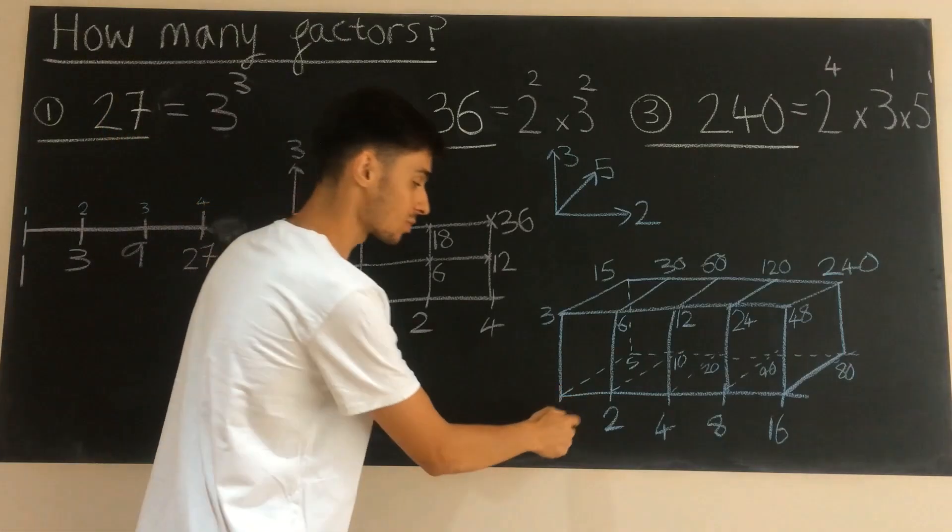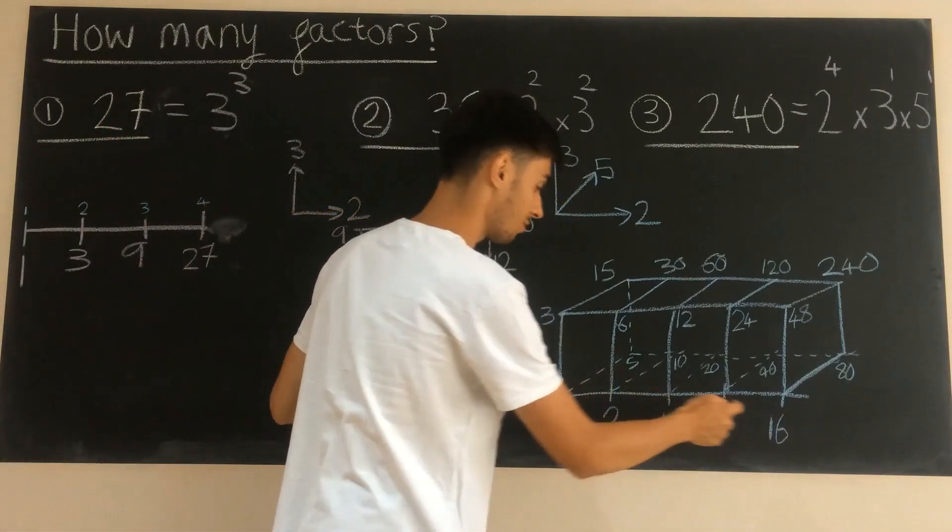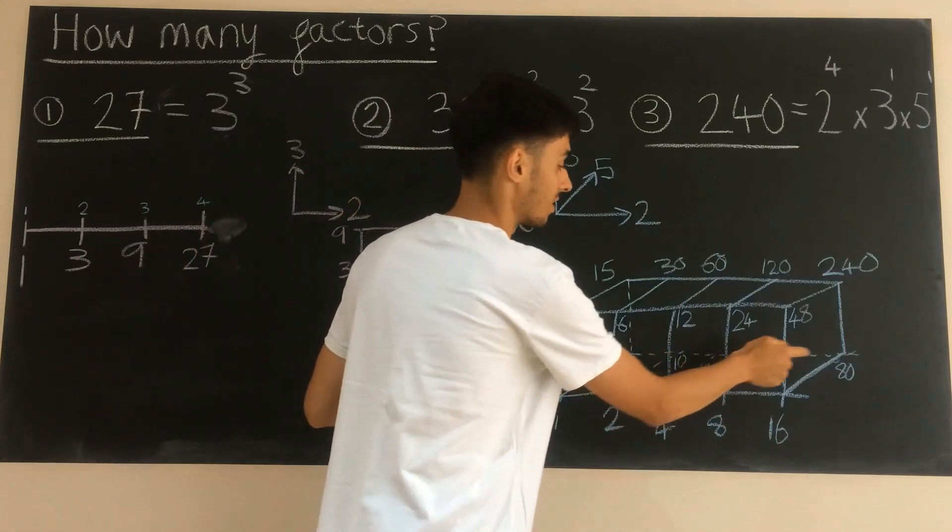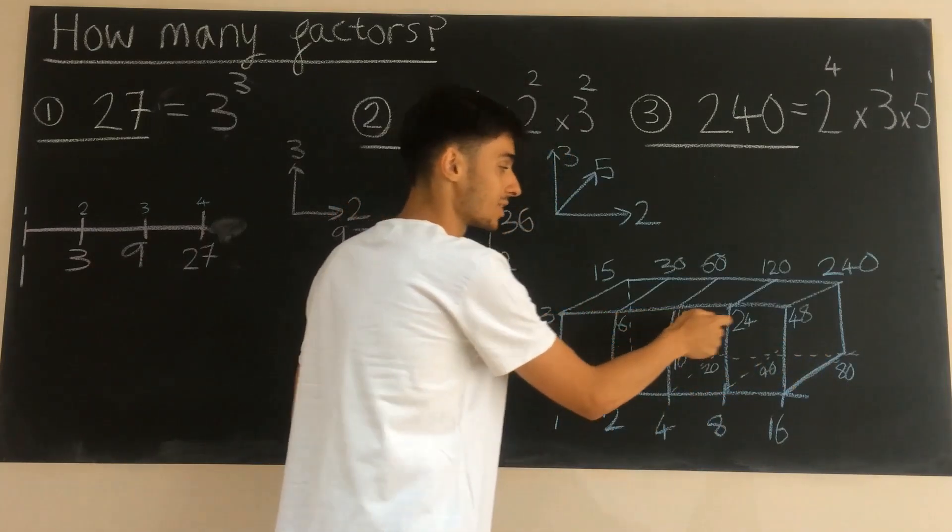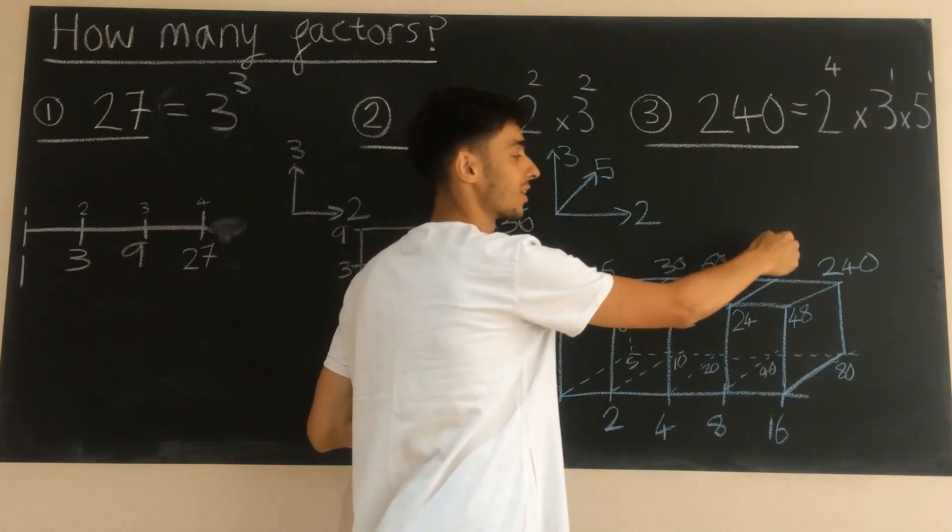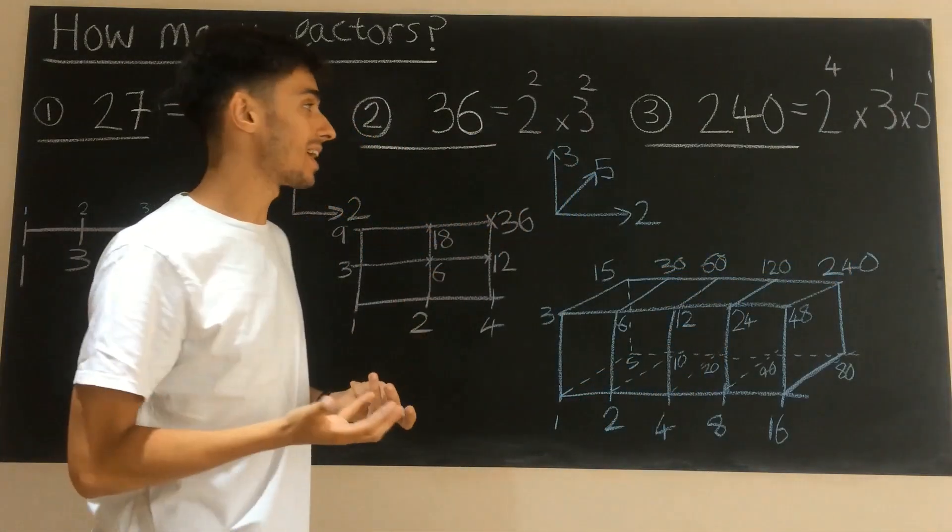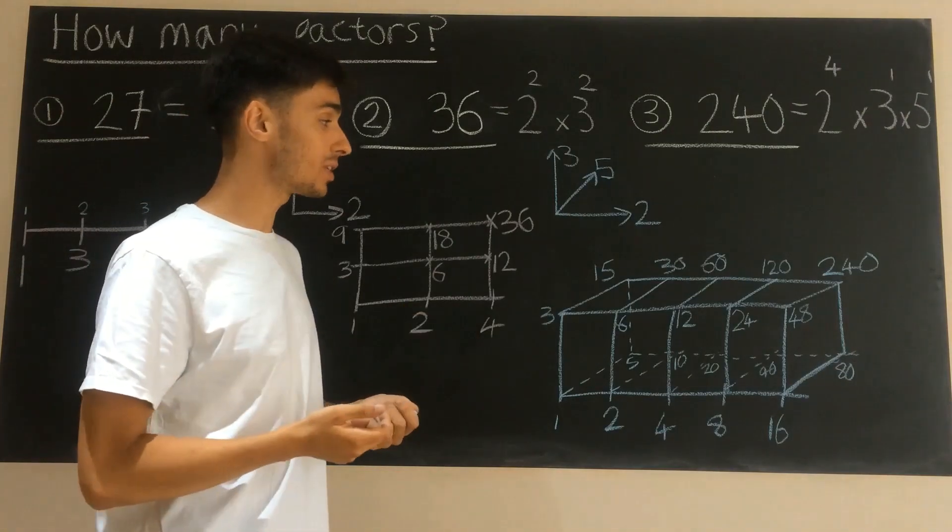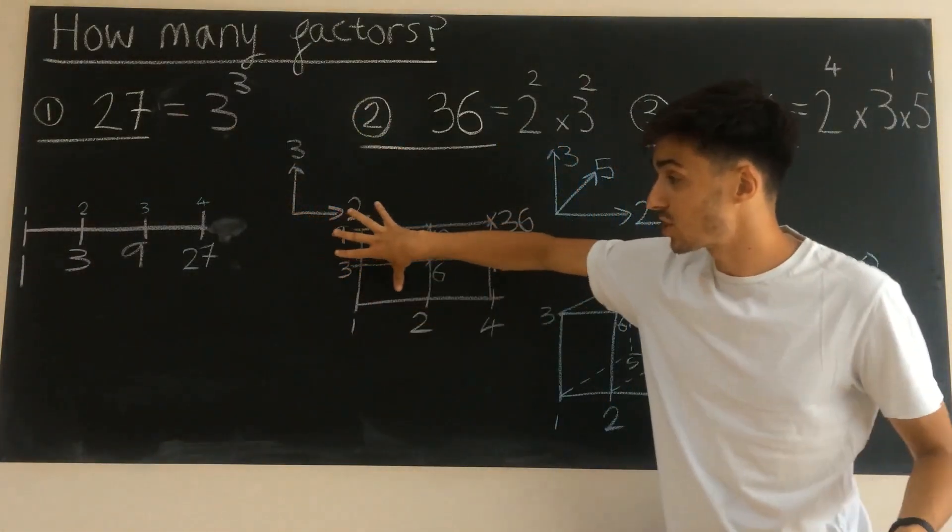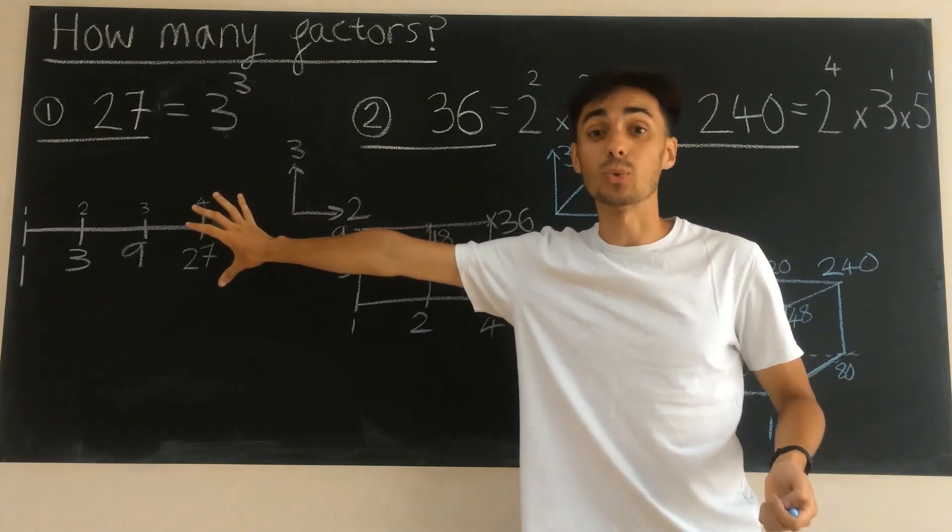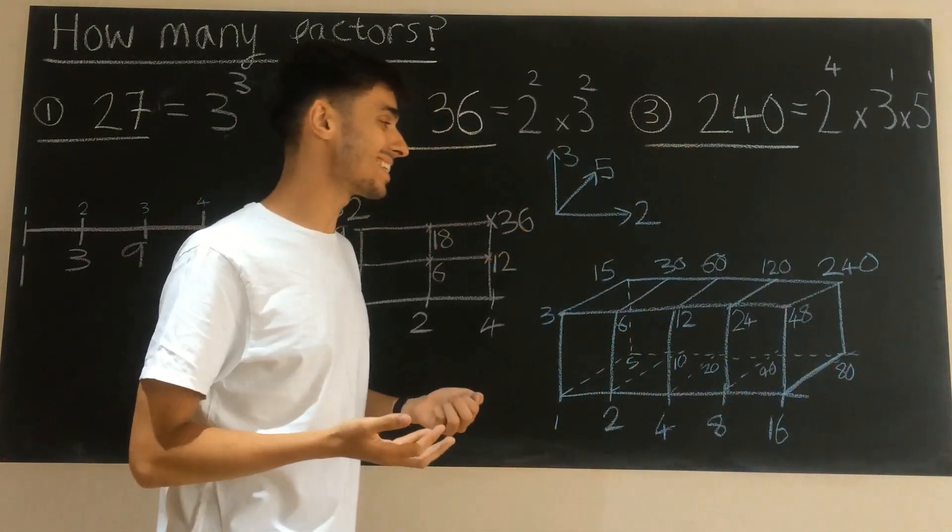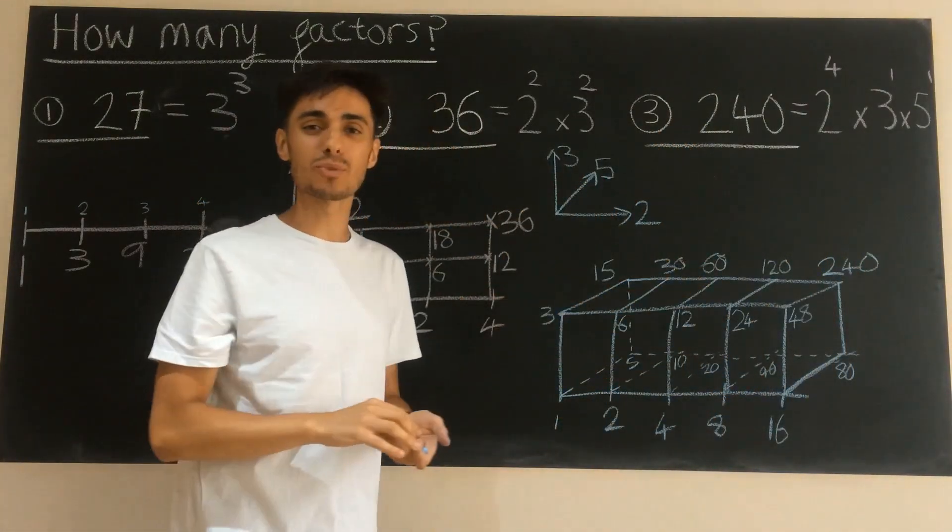They're all of the nodes of our cuboid. So it's really easy to count them up to check how many factors 240 has got. And in this case we can see it's 1, 2, 3, 4, 5, 6, 7, 8, 9, 10, 11, 12, 13, 14, 15, 16, 17, 18, 19, 20 factors. Once we've represented it as a 3D cuboid or a 2D shape or even a one dimensional line, it's really, really easy and intuitive to count up those factors.